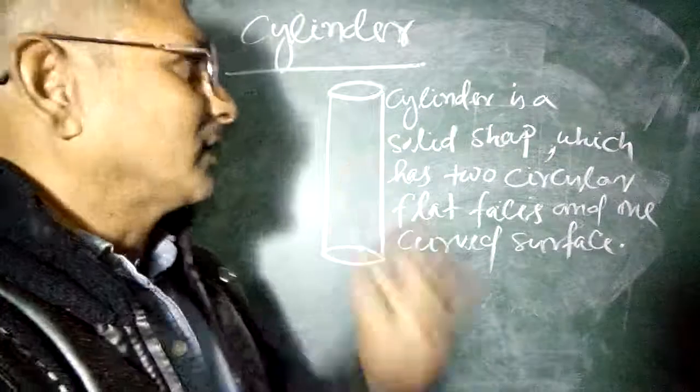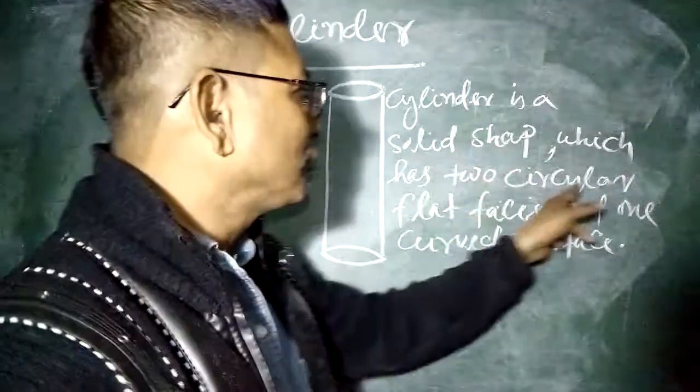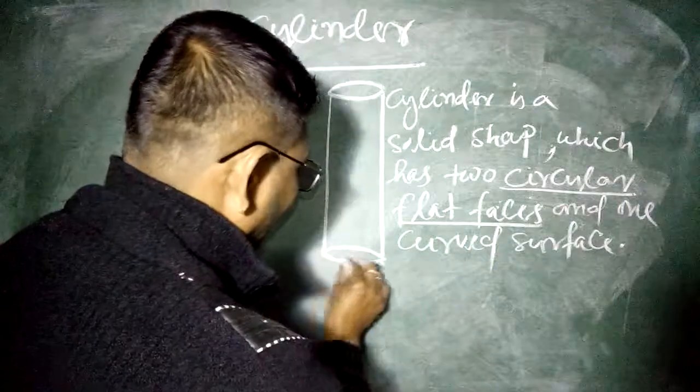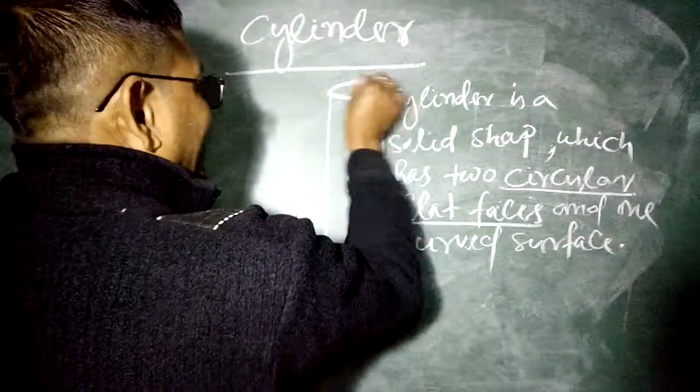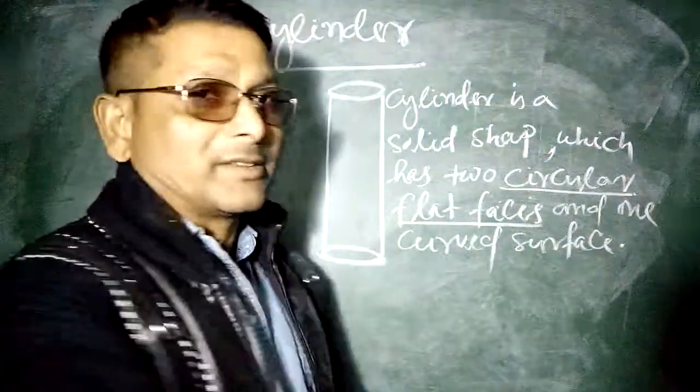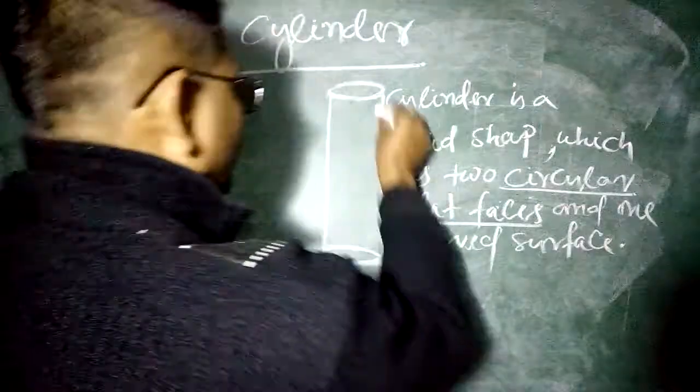Cylinder is a solid shape which has two circular flat faces. Look at this. In these two ends, that is two circular flat faces, and one curved surface.